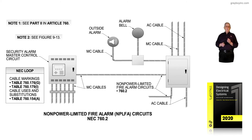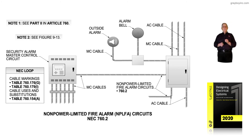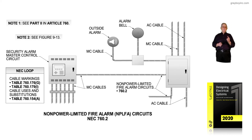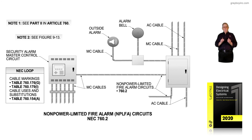The main thing about figure 4-18 is it lists non-power limited fire circuits in 760.2, but it also lists some of the markings and substitute cables that could be used. It shows the security alarm master control center with the circuits, and it routes out to various points — floors and so forth to monitor. It may be just a single story building, but the center is put where it can sound alarms, and people in charge will know that there's a problem in a certain area or floor. That's what figure 4-18 is illustrating.